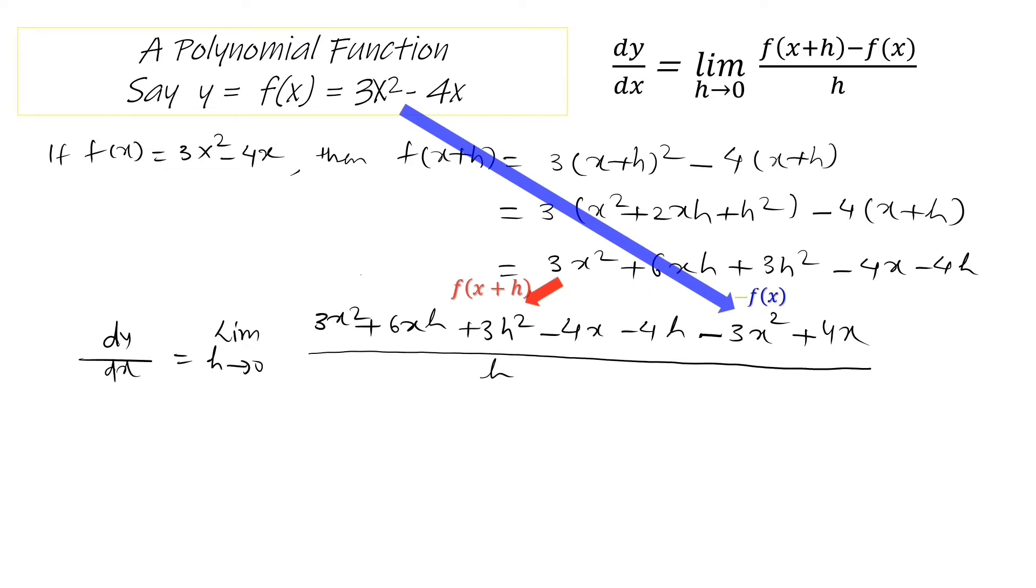Now simplifying, plus 3x square cancels minus 3x square, minus 4x to plus 4x.